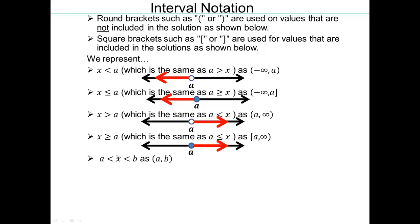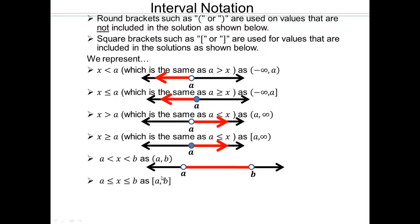For all real numbers x trapped between a and b, but without a and b, that will be written as open bracket a comma b — round brackets on both sides. So here's a, here's b, and all real values trapped between a and b are included. What if you have square bracket a comma b? It's the same picture except a and b are both included, along with everything in between.